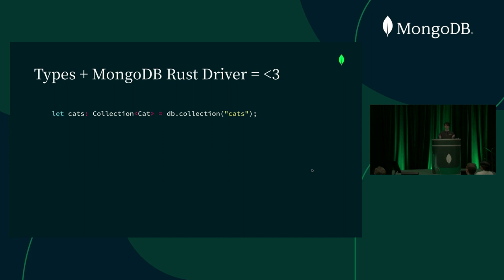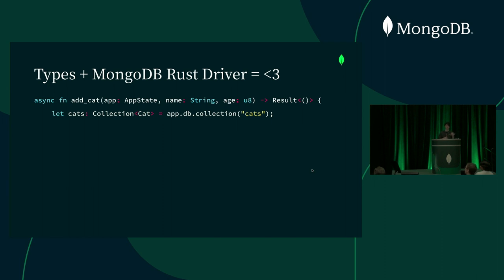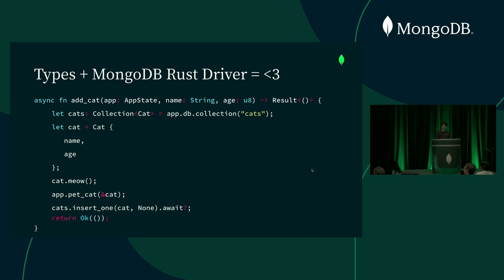Has anyone used an ODM before, like Mongoose or MongoEngine? This works kind of similar to that, but it's built into the Rust driver and it's super fast. To give a more concrete example, let's implement an API endpoint handler that adds a new cat to our database. The add cat function takes in some app state, the name and the age of the cat. First we create the cat from the name and age provided. Once we have the cat, we might perform some business logic — like the cat can meow or we can pet the cat. When we're done, we pass it to the insert one method and add it to our database, then return a result indicating whether it worked. This pattern is super nice because it lets us work with our data naturally — calling custom cat methods and passing it to functions expecting cats — while automatically handling all the serialization without manually writing boilerplate conversion code.